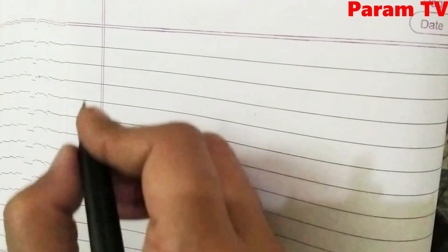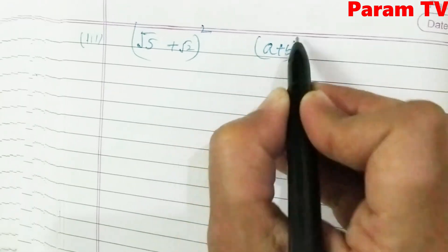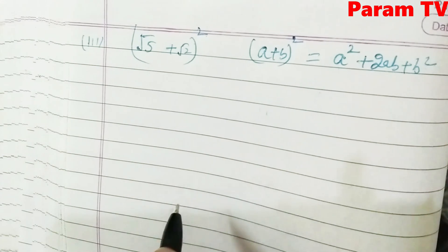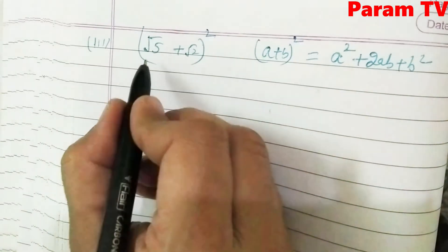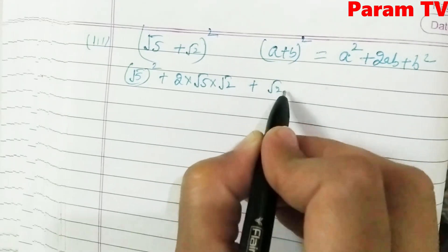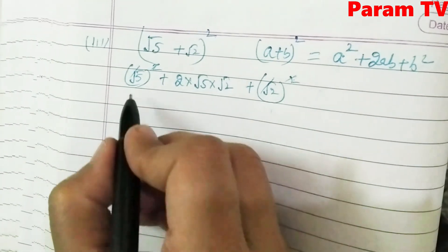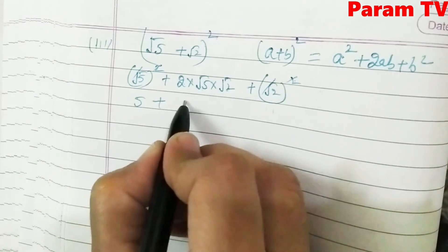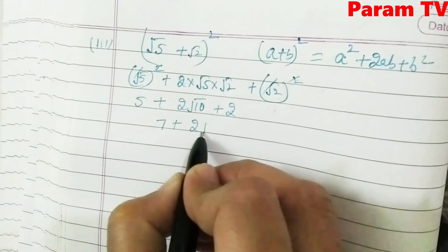Third part: (√5 + √2)². The identity A plus B whole square equals A² + 2AB + B². Applying it: (√5)² + 2·√5·√2 + (√2)² = 5 + 2√10 + 2 = 7 + 2√10. This is the answer. That is all for Question 2.